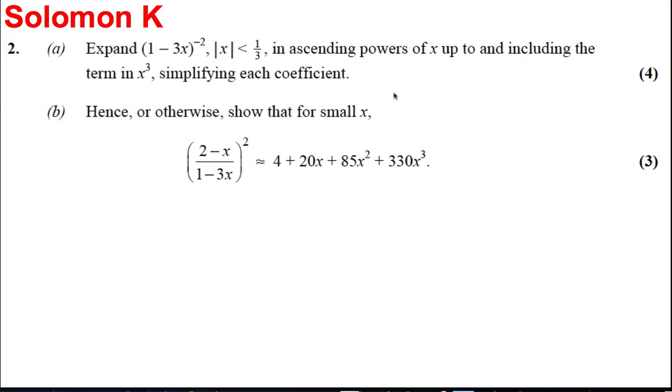Here's another binomial theorem question. In part A, we're asked to expand this expression for the modulus of x less than a third in ascending powers of x up to including x cubed, simplifying each coefficient. And part B, hence or otherwise—we're always going to go for hence, forget the otherwise—show that for small x, this thing is equal to that. Right, let's do part A.